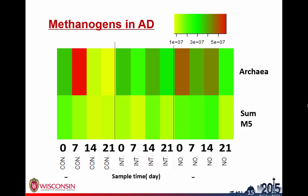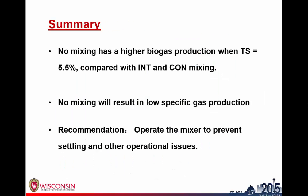Here is a brief summary. No-mixing has higher total biogas production in our experiment. This is somewhat different from previous studies that say mixing is not critical at less than 10% total solids — but in our study, it does have an effect. However, no-mixing results in lower specific gas production. We also recommend that farms continue to run their mixers to prevent settling and other operational issues such as clogging.